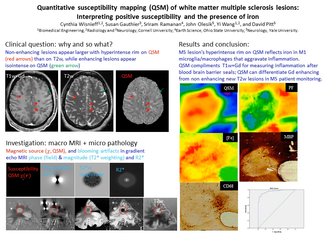Lately, we found that it is very accurate to use QSM iso-intensity to identify gadolinium-enhancing lesions and QSM hyper-intensity to identify non-enhancing lesions in routine MRI monitoring of MS patients. Therefore, QSM can be used to identify MS lesion gadolinium enhancement status without gadolinium injection.